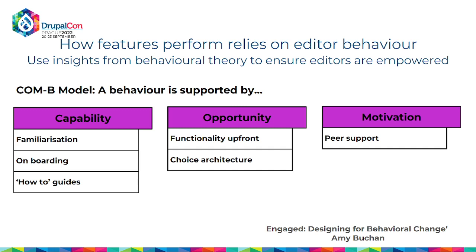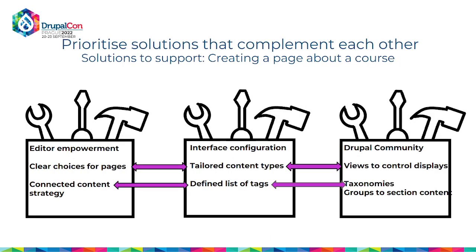For an editor to use a feature they need capability — familiarity, knowing what it does, having onboarding or a how-to guide. They need opportunity — if the feature is buried beneath all the other paragraph options they may never use it. The interface can support this through choice architecture: put things in front of people with meaningful labels. There's also motivation — editors will learn from other editors; they'll listen to a peer far more than to someone like me saying 'this is the way to do it.' Every feature on the roadmap needs effort put into this side too.